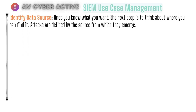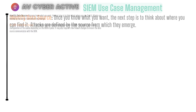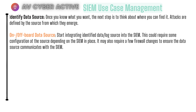The first stage is to identify your data source — Windows, Linux, or IoT devices as the case may be. Once you know what you want, think about where to find it, since attacks are defined by the source from which they emerge, such as base events or syslog. Next in the lifecycle is to onboard or offboard your data source — this is the start stage of integrating log sources into your SIEM. It may require config changes at the source for log forwarding, firewall rule changes, and opening port 514 UDP so your SIEM connector, receiver, or load balancer can receive those logs.